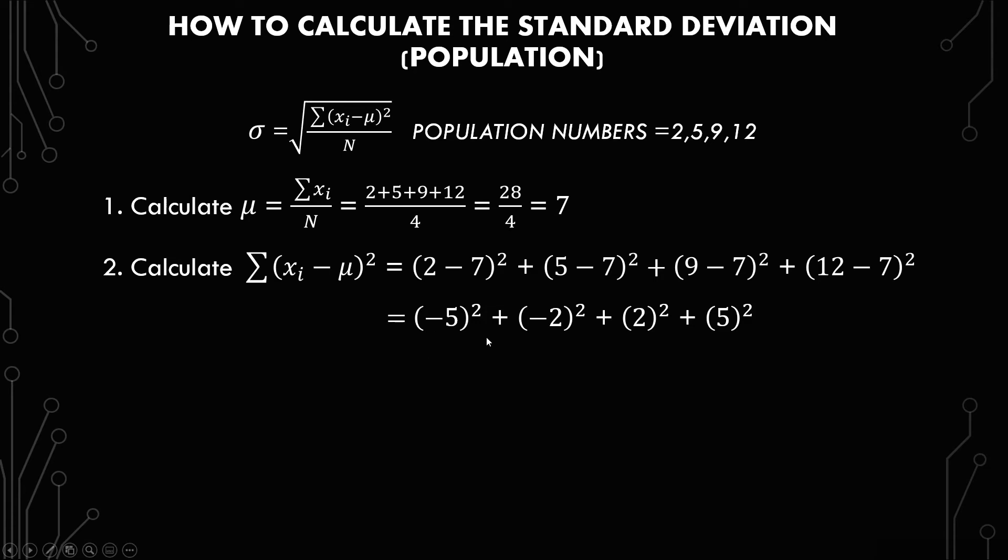Just like before, we have negative 5 squared plus negative 2 squared plus 2 squared plus 5 squared. So we have 25 plus 4 plus 4 plus 25, which gives you 58.